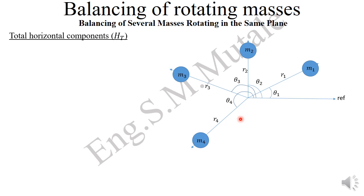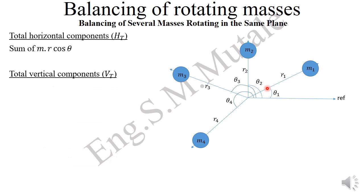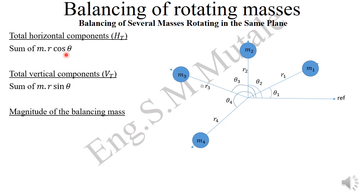The procedure is to find the total horizontal components, which are given by the mass of the body times its radius multiplied by the cosine of the angle from the reference phasor. You do this for all masses: m1·r1·cos(θ1) + m2·r2·cos(θ2), and so on. For the total vertical components, the formula is the same except you use sine instead of cosine.